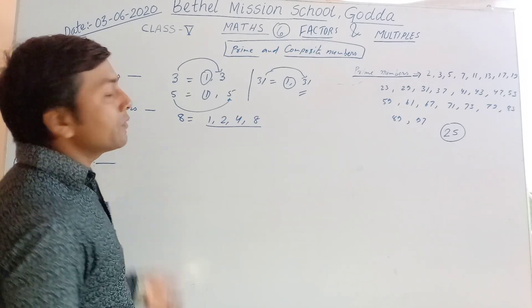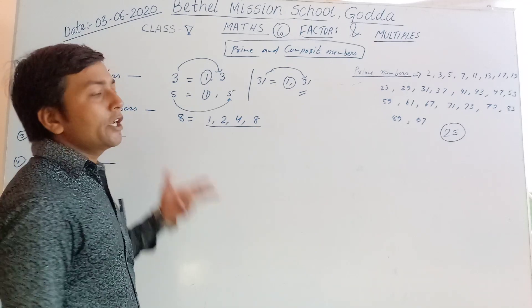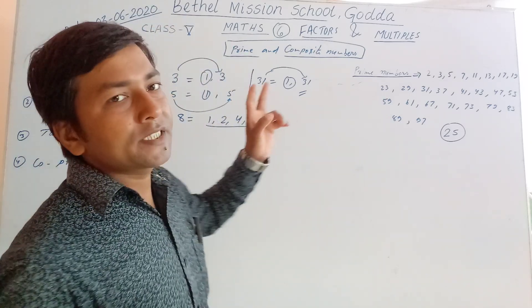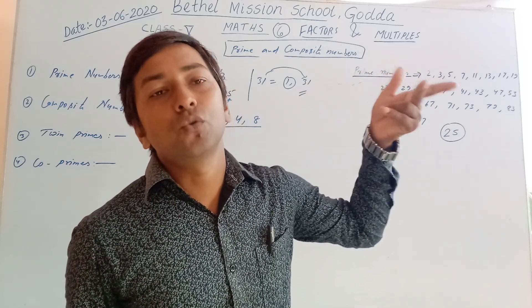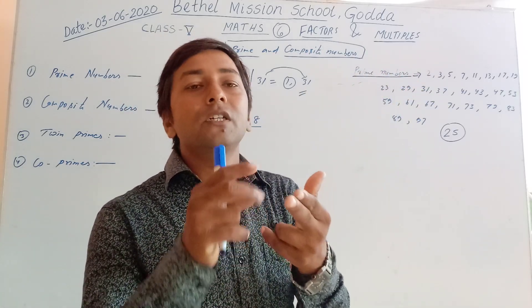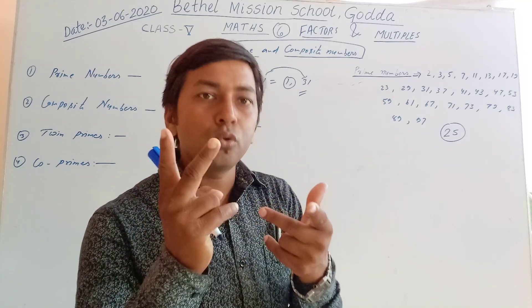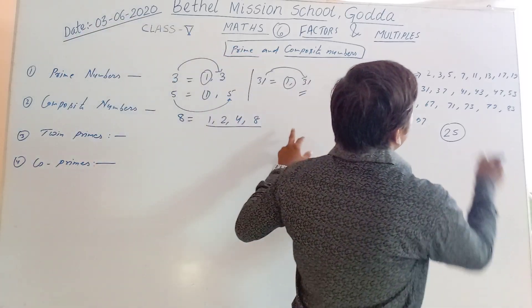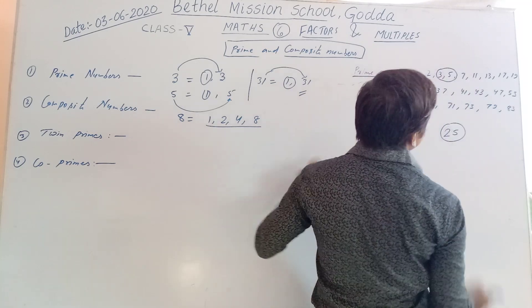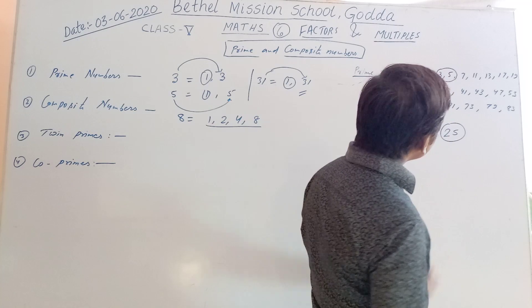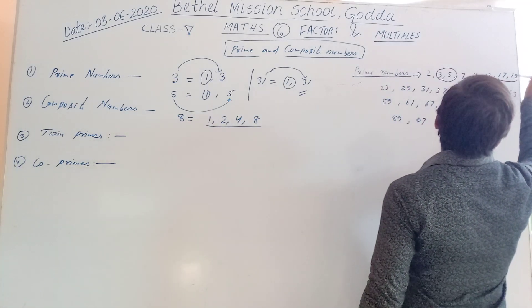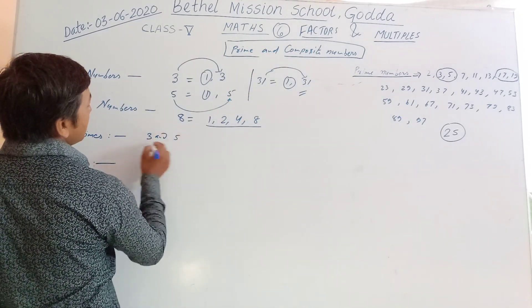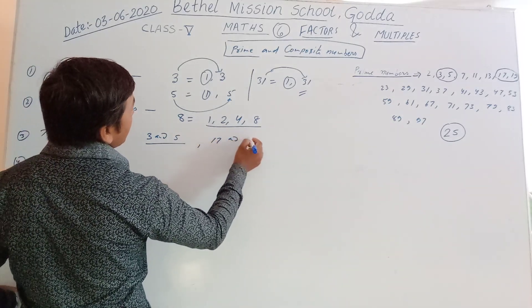Now, twin primes. Twin primes means twin — that is two, judwa. Twin primes are primes which differ by two. If the difference between two prime numbers is two, then those prime numbers are called twin primes. Look carefully: three and five — the difference is two, so they are twin primes. Also, seventeen and nineteen — these are twin primes.